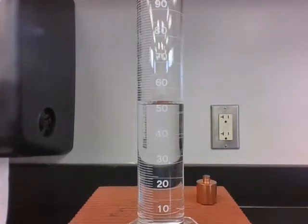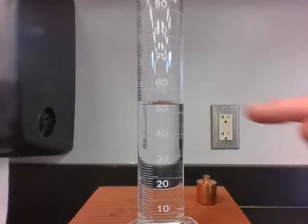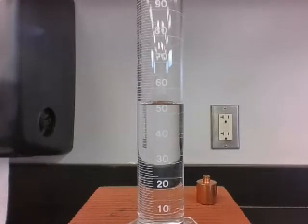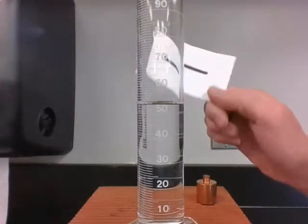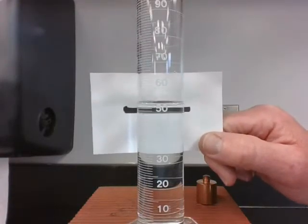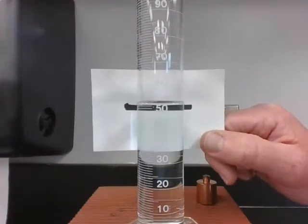If you can be certain to the ones place, you can make your best estimate one place further—the tenths. So I can estimate between each line to find where the meniscus is and give my best tenths place estimate. You can use a meniscus reader card or not; that's personal preference when you get eye level and look.